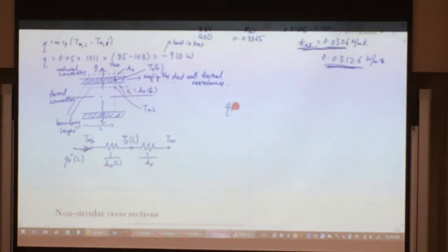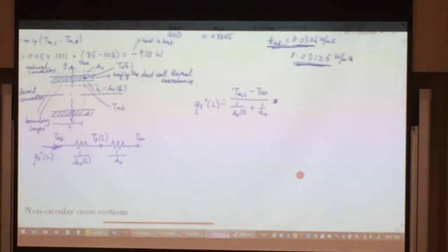Your Q_s double prime at L will be equal to T_mL minus T_infinity divided by 1 over the entire thermal resistance, 1 over H_xL plus 1 over H_0. We could go ahead and solve that later, but I'm going to leave this as what it is, because this is one of the questions that was asked. We want to find out what is the heat flux. Before that, I need to find out a few other things, especially what would be my H_x value.